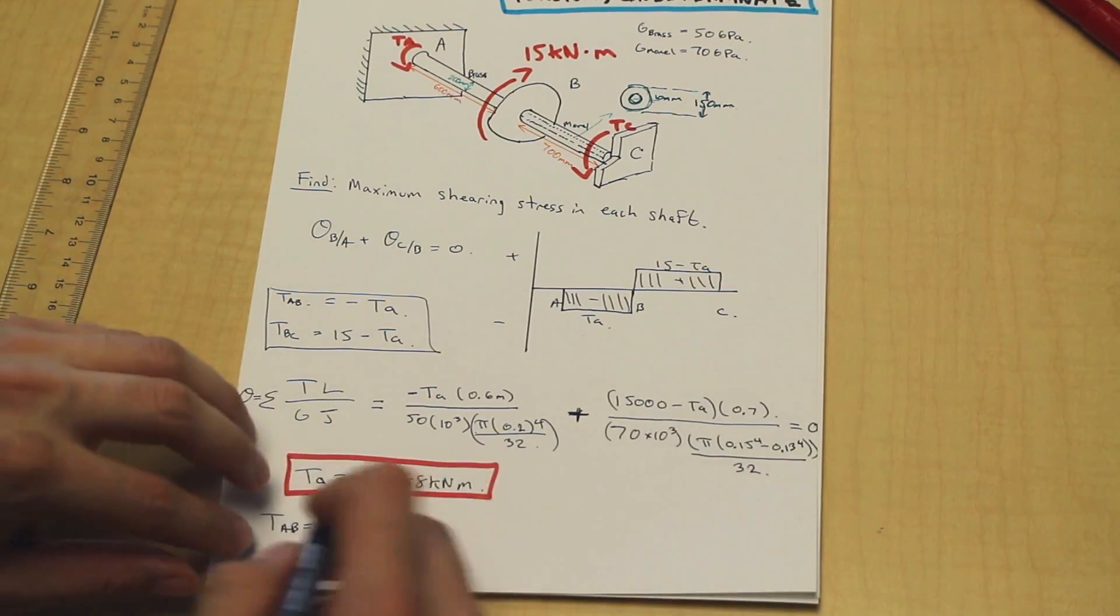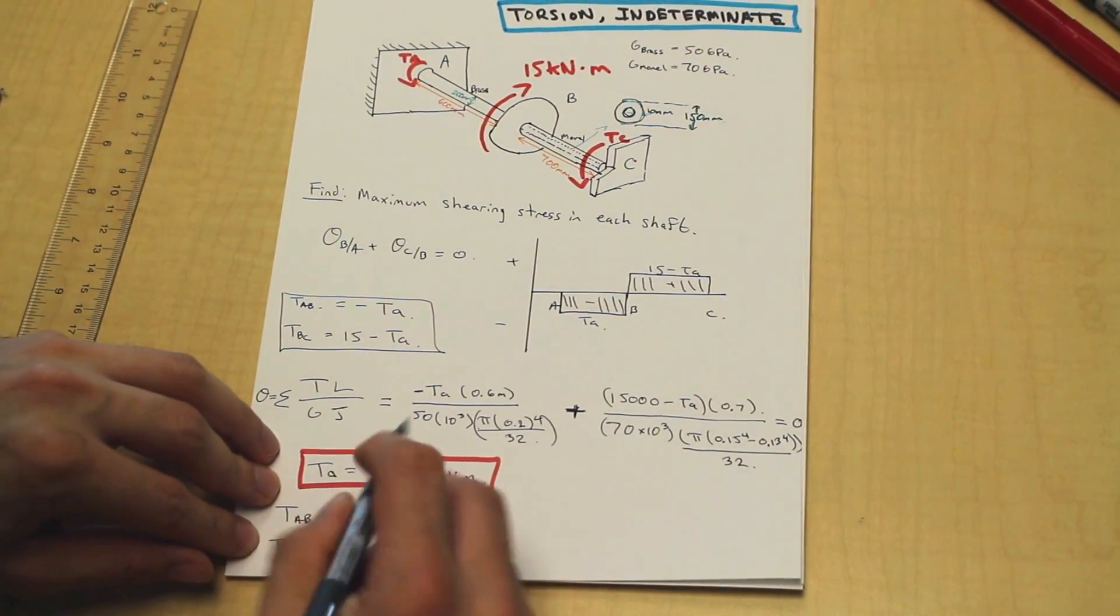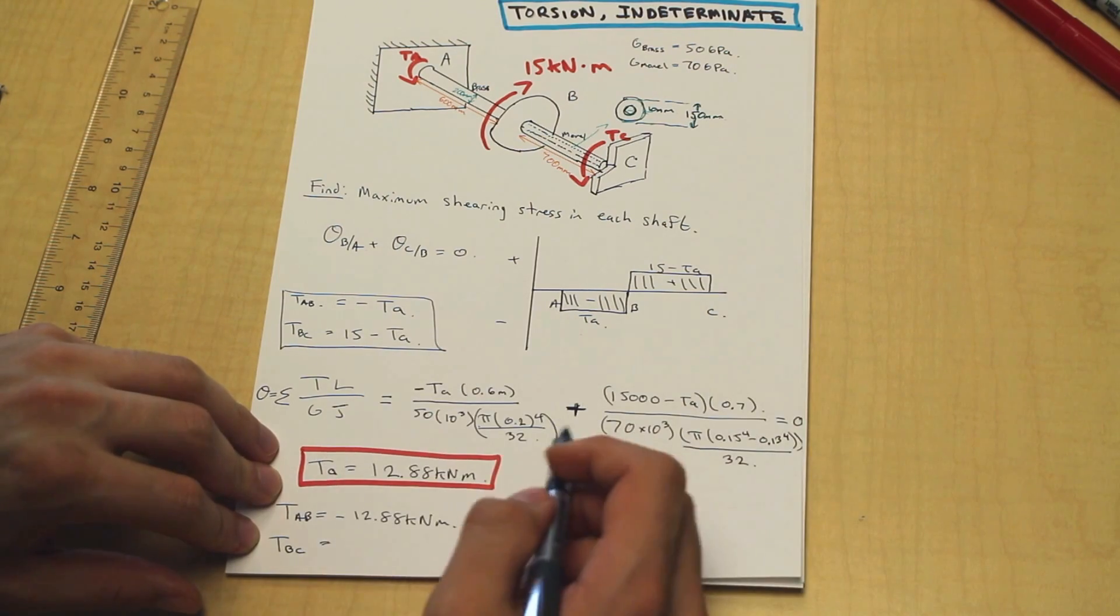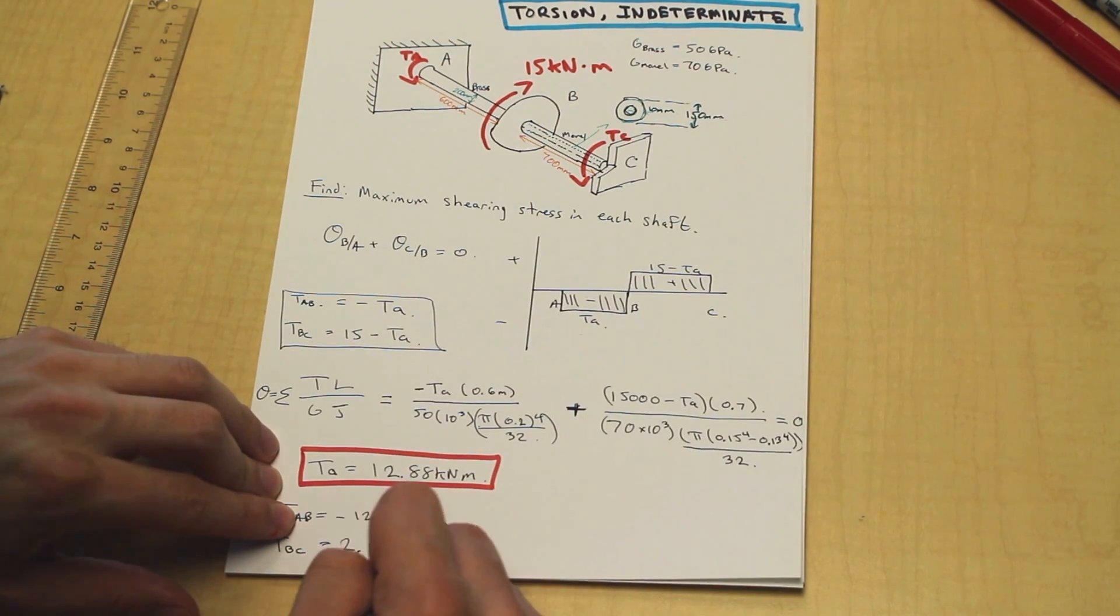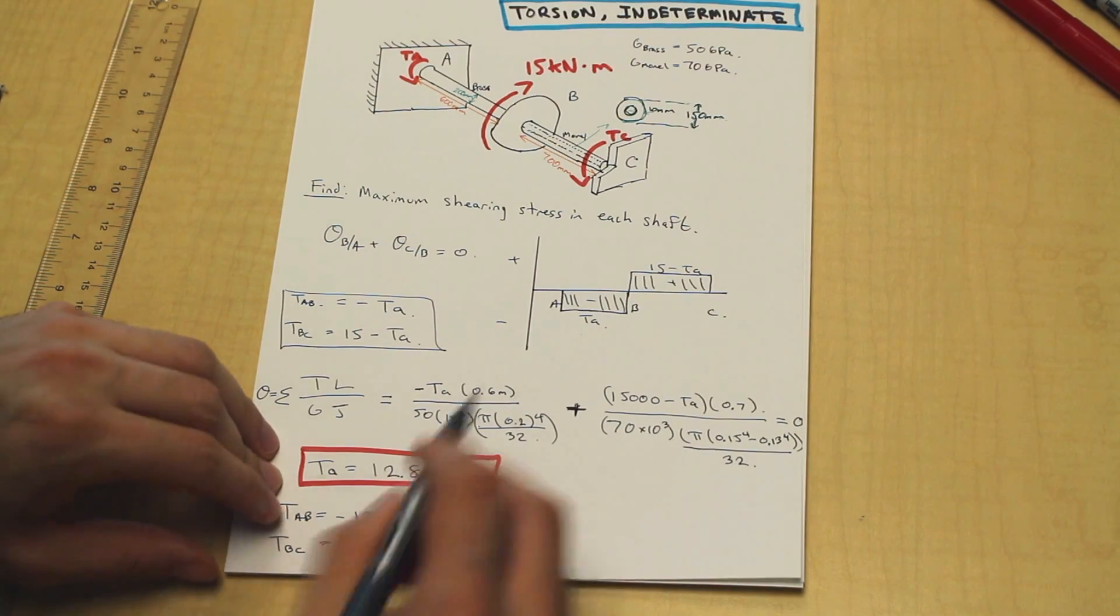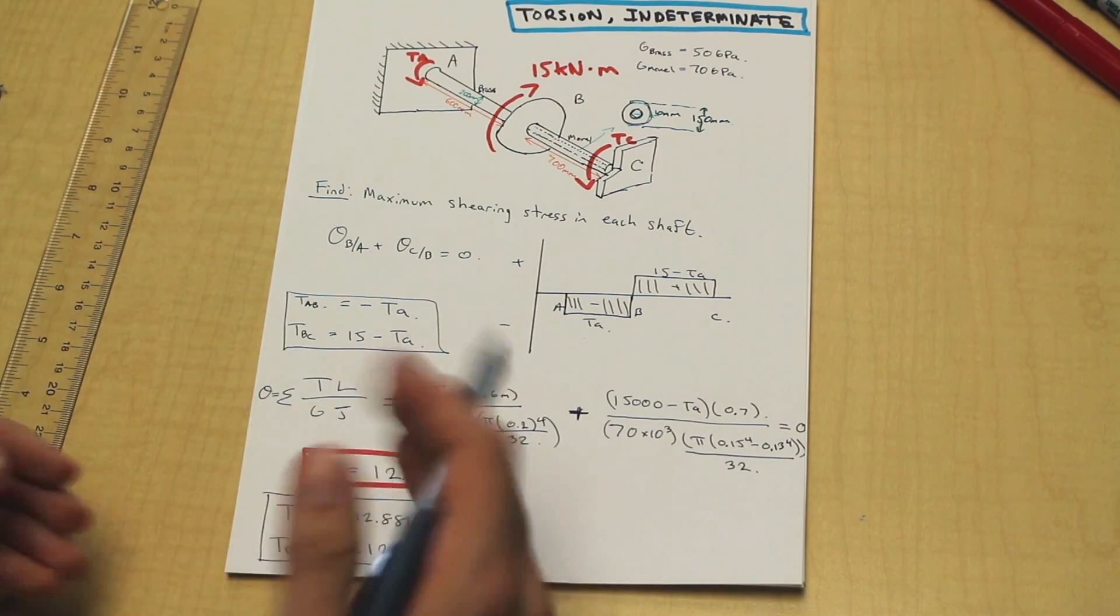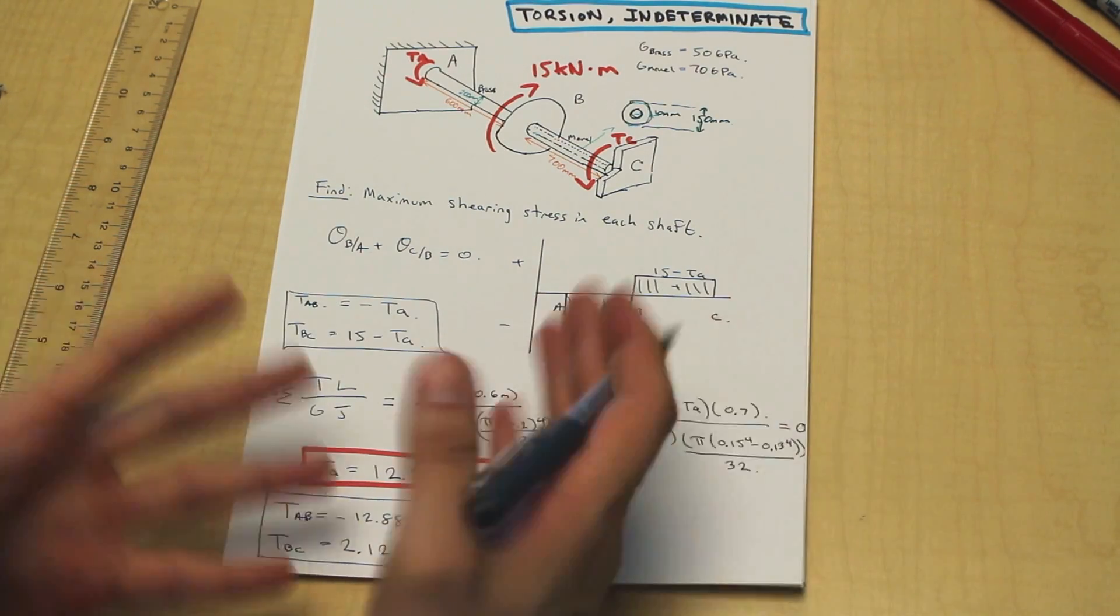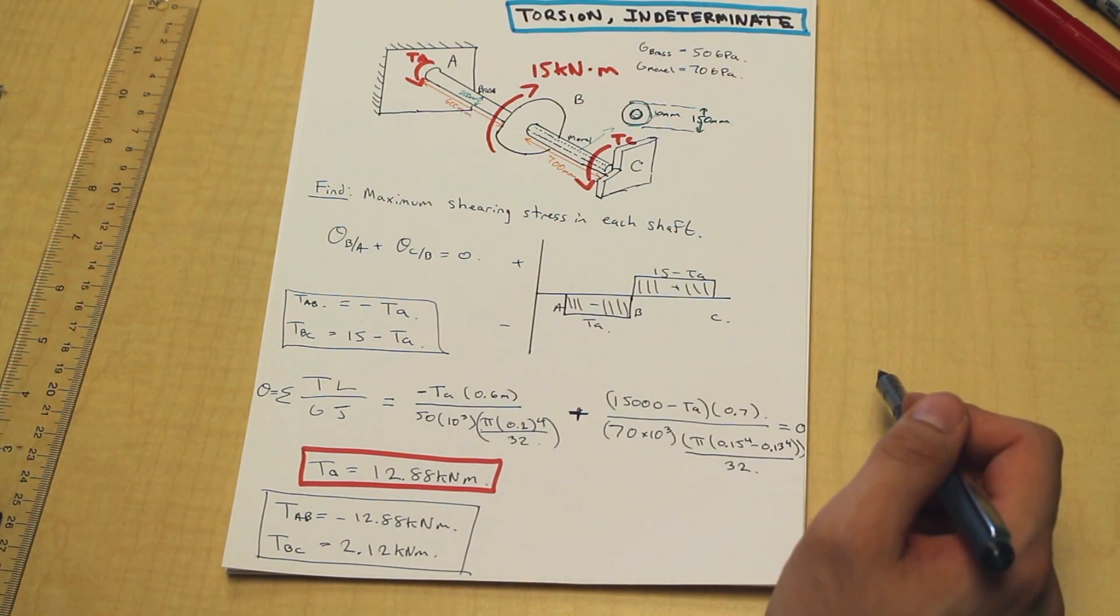That's simple. That's just plugging the numbers straight in. And TBC, if you plug in 12.88 into this equation here, you're going to end up with 2.12 kilonewton meters. Now what was the question asking? Let's not get confused. Let's remember why we're doing all this in the first place, and it's to find the maximum shearing stress in each shaft.